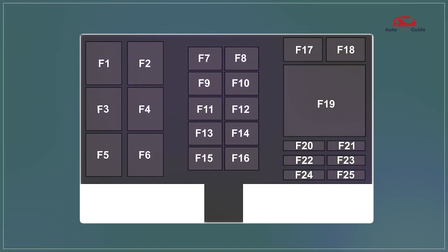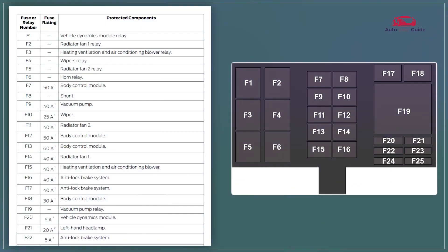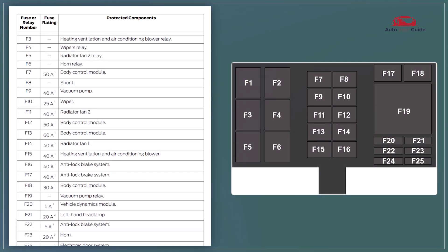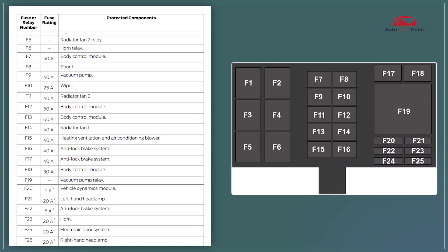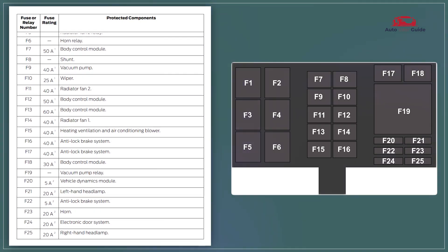The 2020 Ford GT front power distribution box manages electrical power distribution, housing fuses and relays for various systems. It features a compact design for weight savings and efficiency, and includes a robust cooling system to ensure optimal performance under high stress conditions.